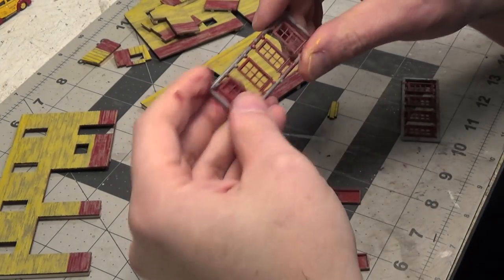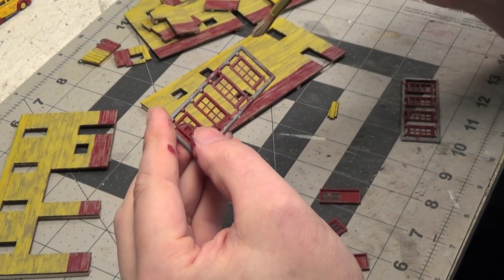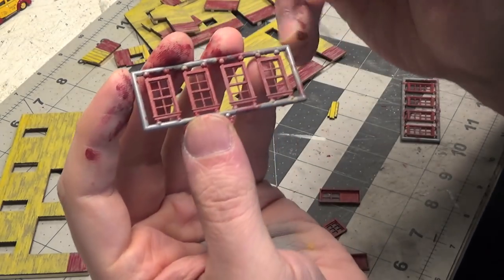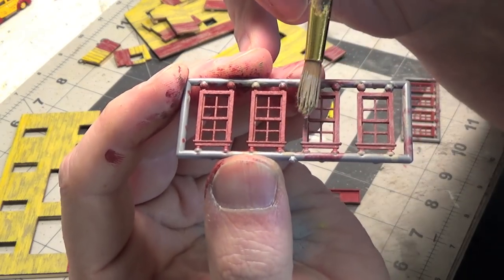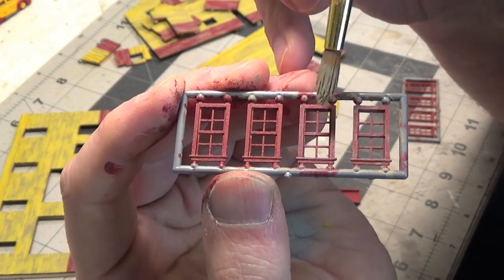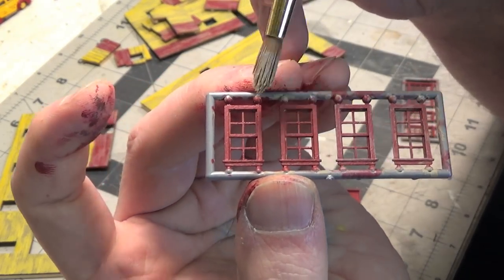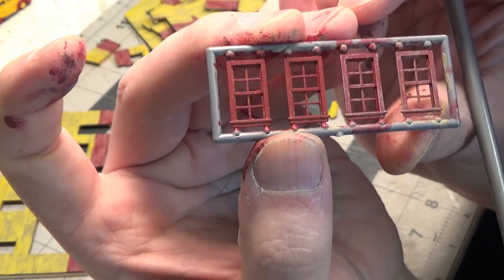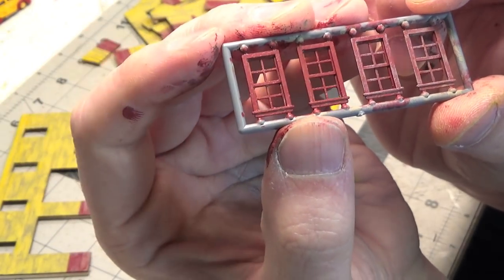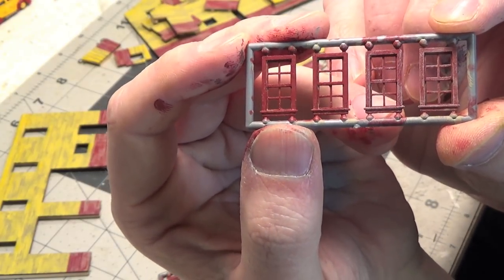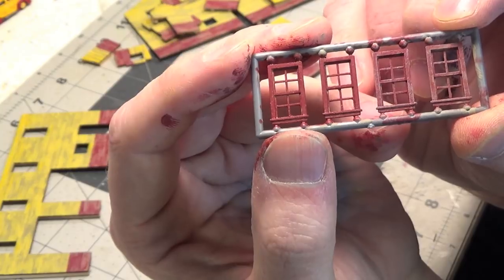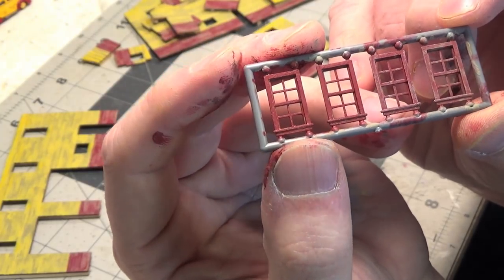So I'm using the same dry brush effect on the windows and doors too. So these two here are done and these aren't. And you're just very lightly going over it with the gray. Just to give it a sun faded look and also a chipped paint look.